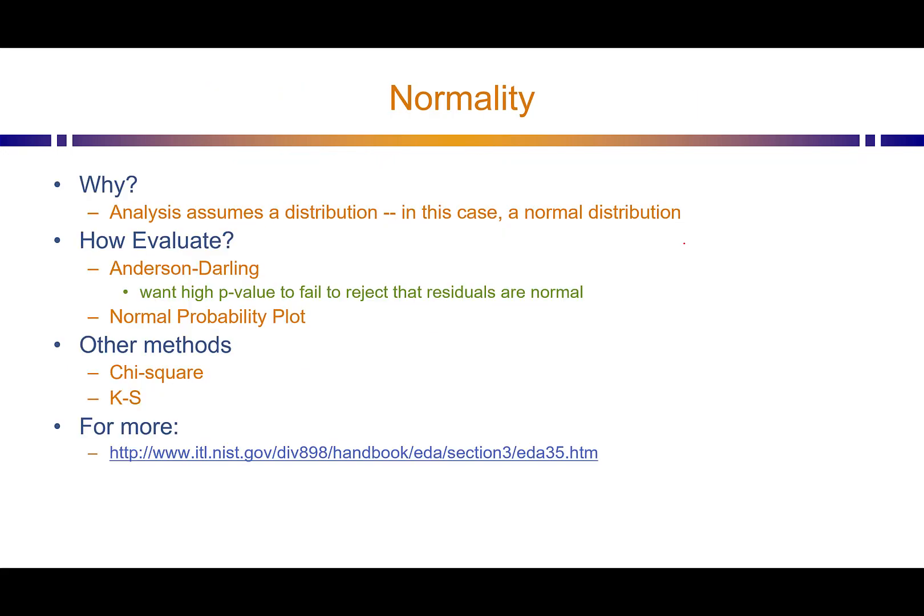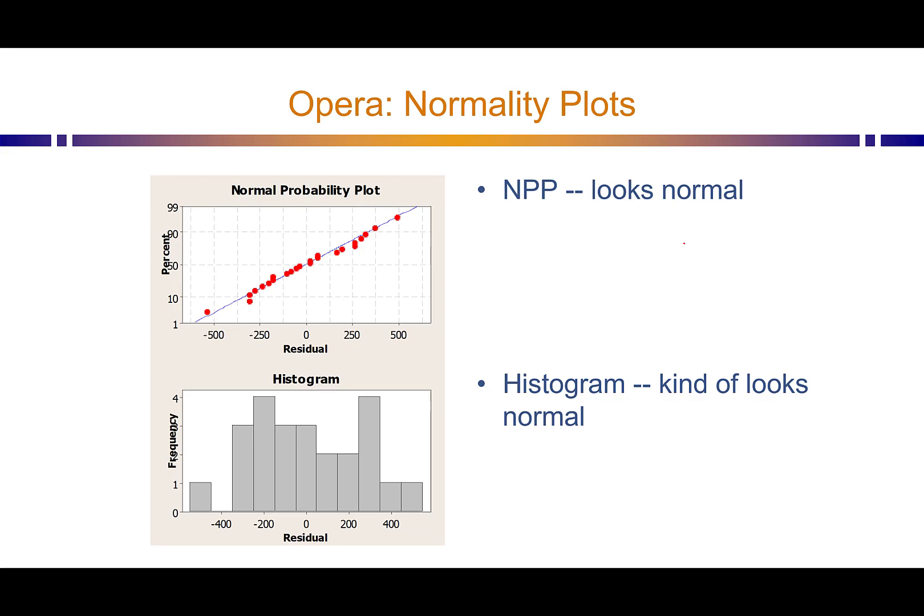There are three things we need our residuals to be: normally distributed, have equal variances, and be independent. For normality, we evaluate this as we would for a t-test, but focusing on the residuals rather than the raw data itself. This allows us to look at all residuals together, not split up by the different approaches or levels of our independent variable.